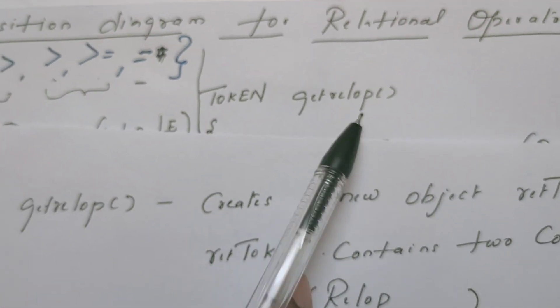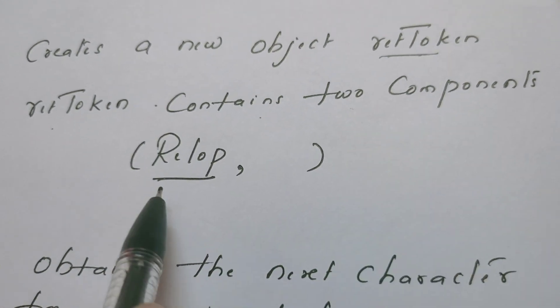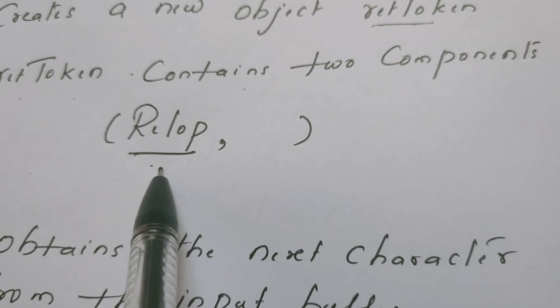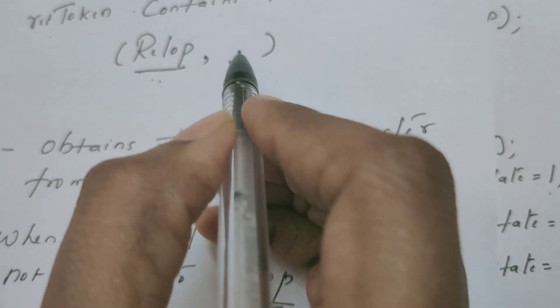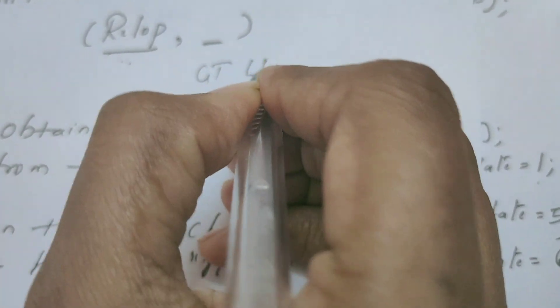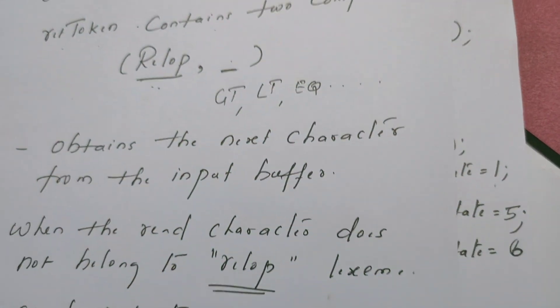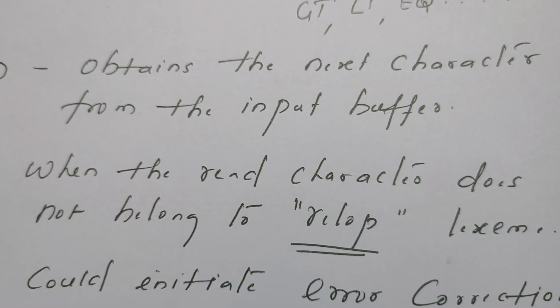Now let us discuss the functions used in the code. getRelationalOperator is the name of the function. It creates a new object writtenToken which contains two components. The first component is the name of the operator, initialized to relational operator by default. The second component, the attribute value, gets initialized based on the type of operator — greater than, less than, equal to, etc. We also have the method nextCharacter, which reads the next character from the input buffer.